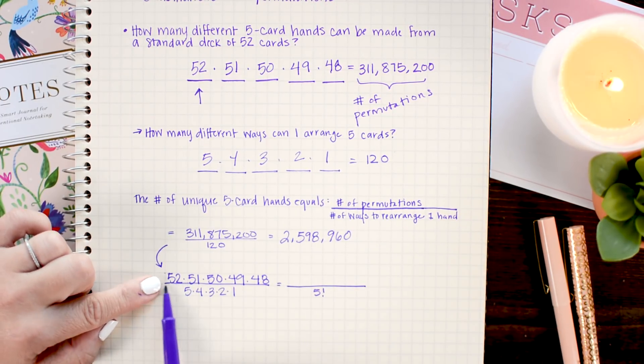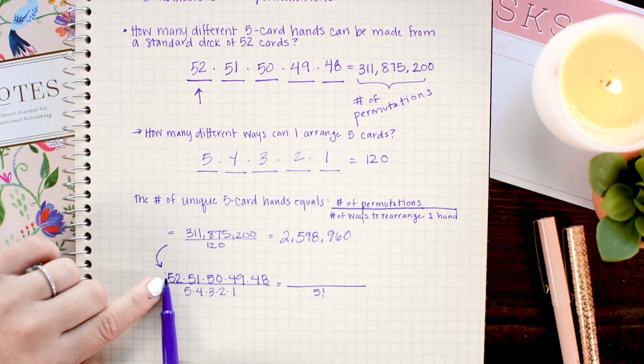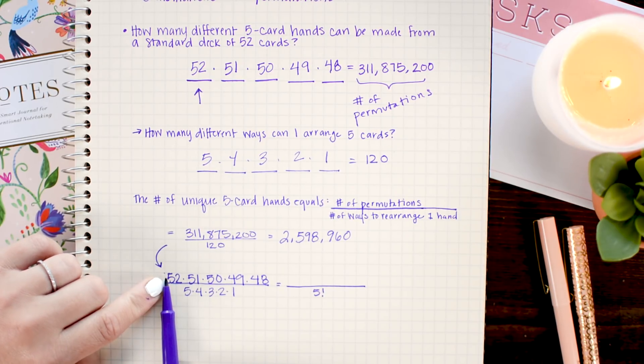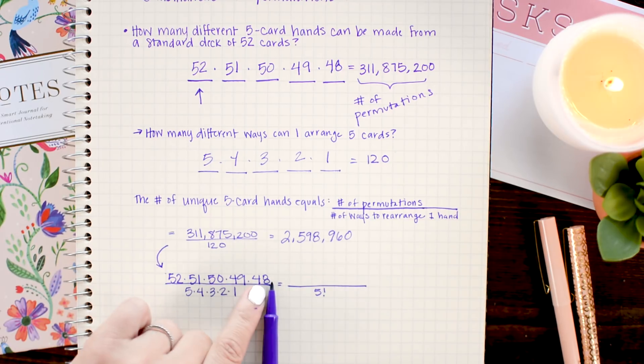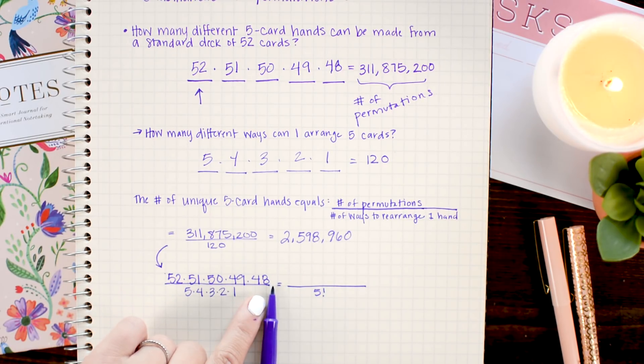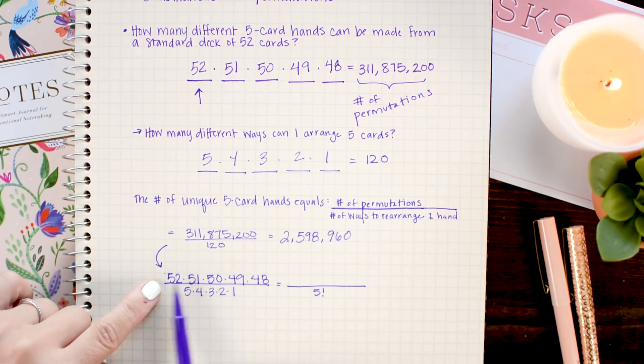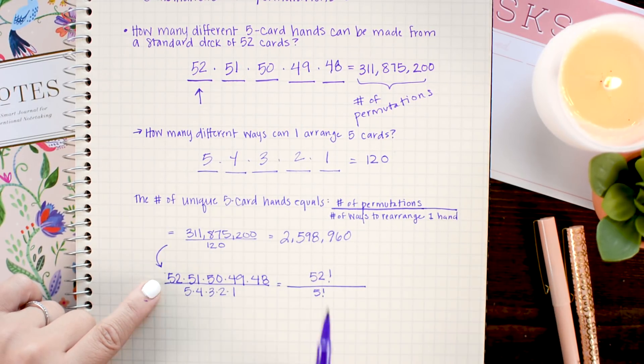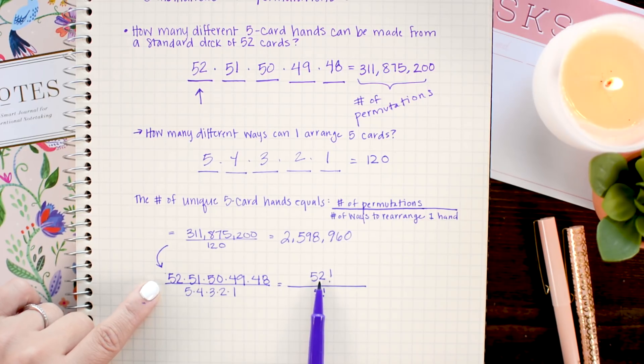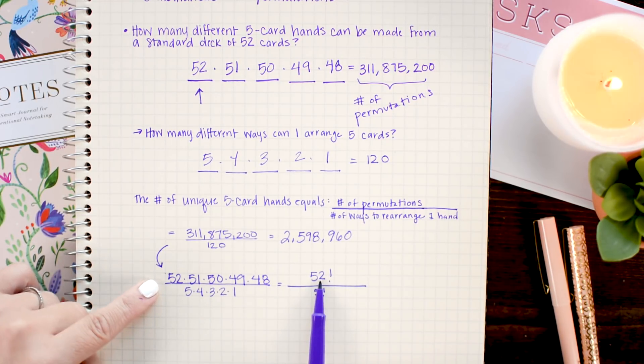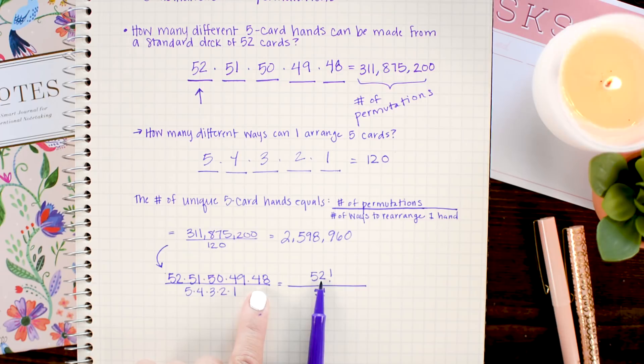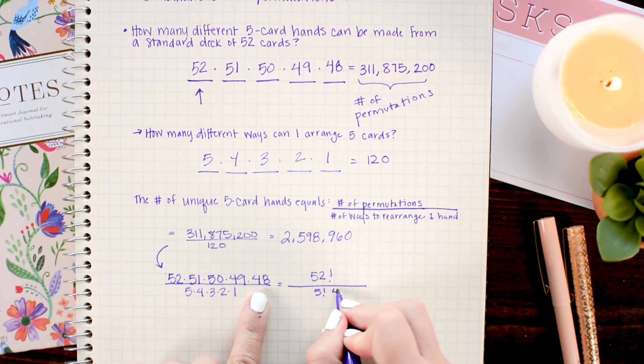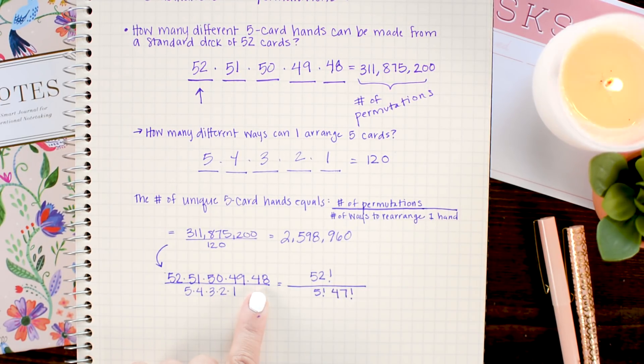Now, in the numerator, if I wanted to express this as 52 factorial, I would need to make sure I cancel out everything that's below 48. So, that's exactly what we're going to do. I'm going to write 52 factorial in the numerator, which gives me all the integers from 52 down to 1 being multiplied together. I only want the ones down to 48, so I'm going to divide out everything from 47 and down, which I can express as 47 factorial.